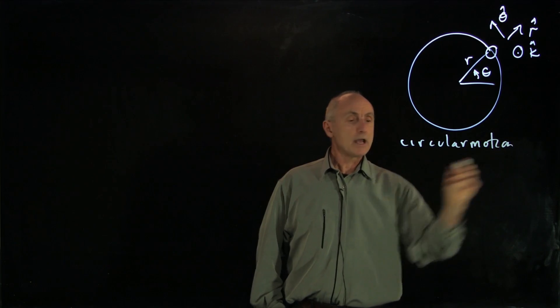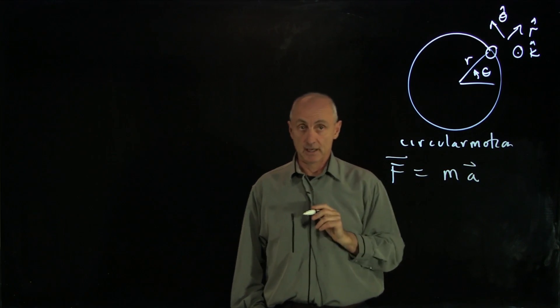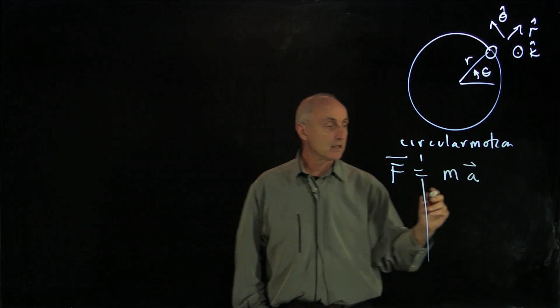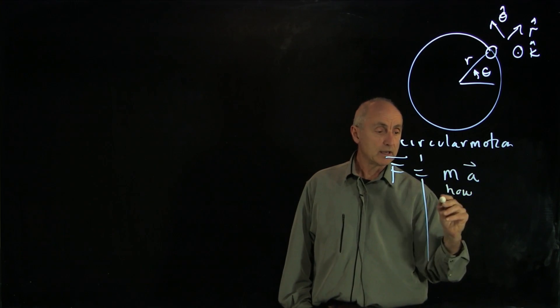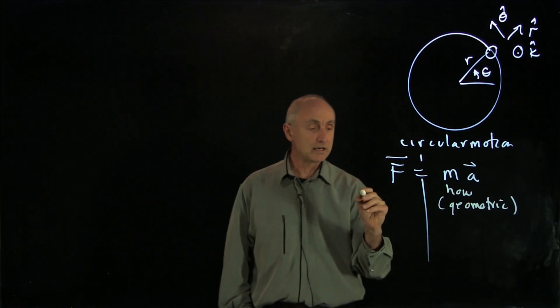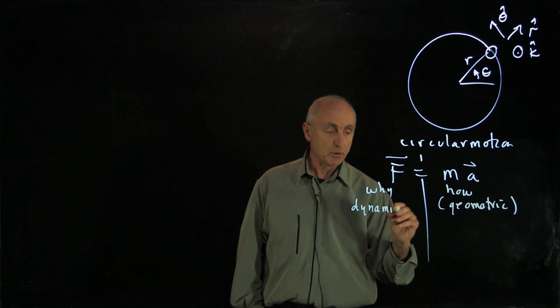When we write Newton's second law as F equals ma, remember we can divide these two sides. This side, the how, is a geometric description of the motion. And this side is the why, and this is the dynamics of the motion.